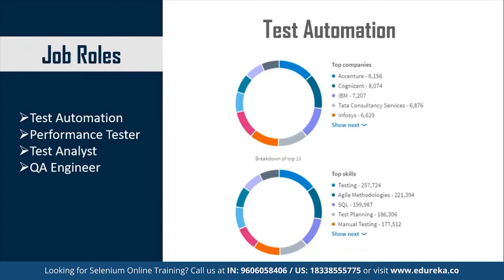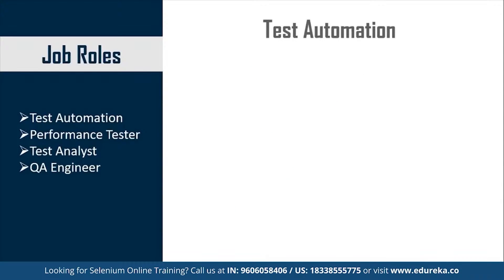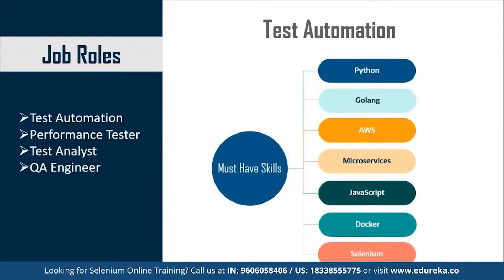The top skills required to become a test automation engineer include knowledge of testing, agile methodologies, SQL, test planning, and manual testing. Apart from these, you need to be well acquainted with programming languages like Python, Golang, and JavaScript. You also need to be well versed with AWS, Microservices, Docker, and Selenium. These skills will basically help you move to a higher position as a test automation engineer and also aid your appraisal.